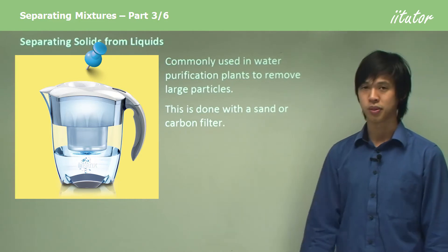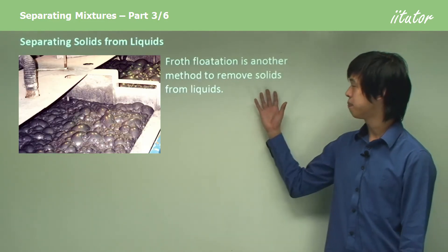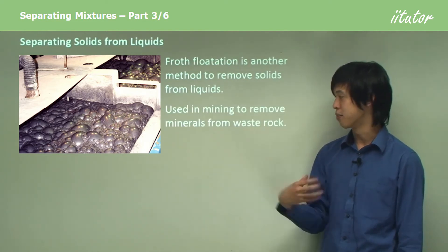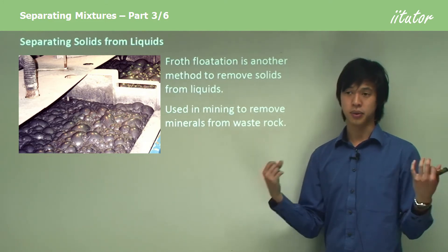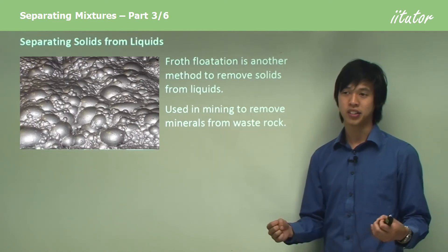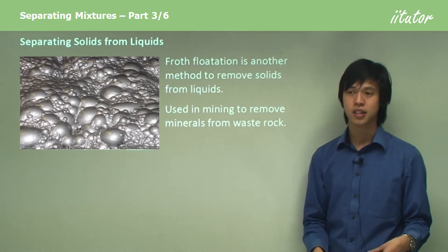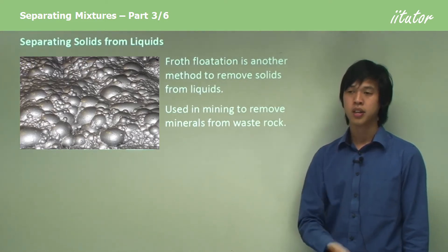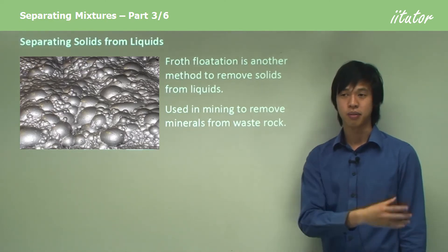Another way to separate solids from liquids is through froth flotation, which is used in mining to remove minerals from waste rock. In mineral refining, we dissolve the rock in some kind of chemical and try to remove impurities, because the impurities dissolve whereas the metal stays as a solid. So the metal remains as the solid in the liquid, and we need to extract that.